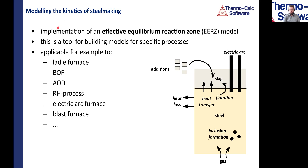The Thermocalc Process Metallurgy module is more to be considered a framework and tool for building models for specific processes such as the ladle furnace, BOF, AOD, RH process, electric arc furnace, or even the blast furnace liquid part. There are example models for different processes like ladle furnace, BOF, or AOD, but you will need to tune them for your actual process. Because in the steel industry there is basically a unique furnace in every plant, these models need in any case to be tuned.